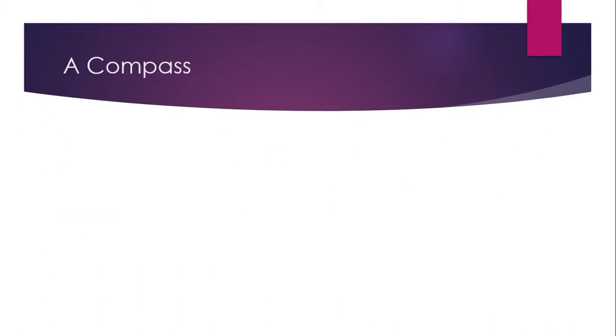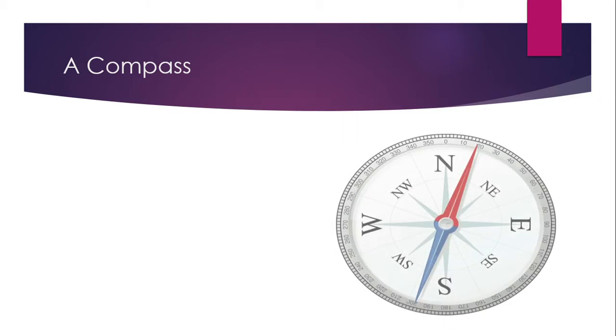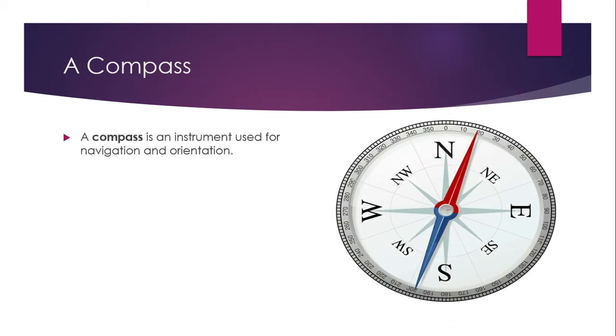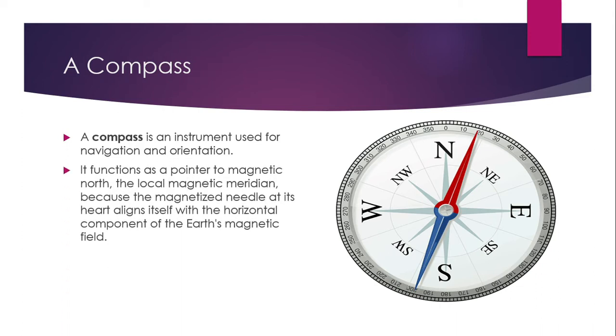A compass is an instrument used for navigation and orientation purposes. It functions as a pointer to magnetic north, the local magnetic meridian because the magnetized needle at its heart aligns itself with the horizontal component of the Earth's magnetic field.